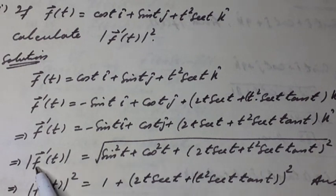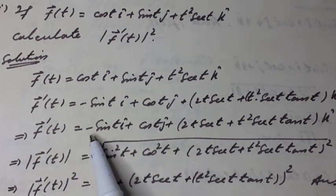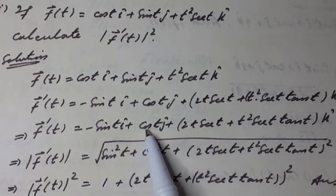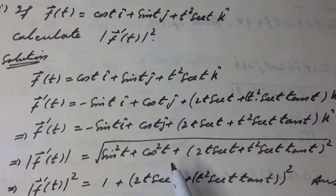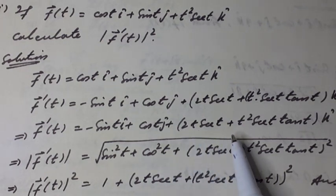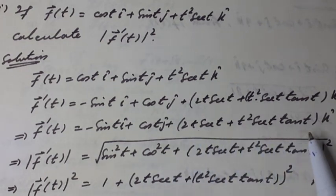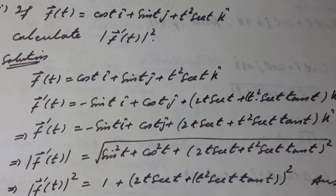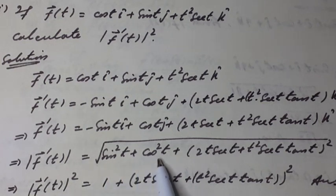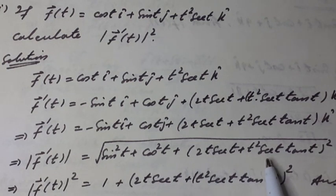The magnitude of f'(t) equals the square root of sin²(t) + cos²(t) + (2t·sec(t) + t²·sec(t)·tan(t))². Squaring both sides, we have |f'(t)|² = sin²(t) + cos²(t) + (2t·sec(t) + t²·sec(t)·tan(t))² = 1 + (2t·sec(t) + t²·sec(t)·tan(t))².